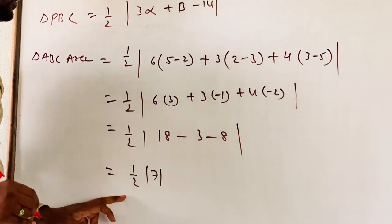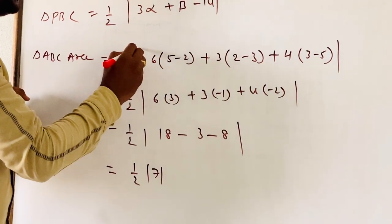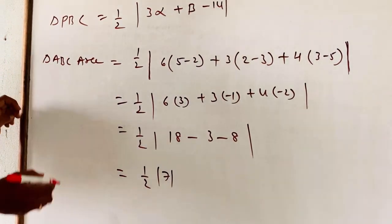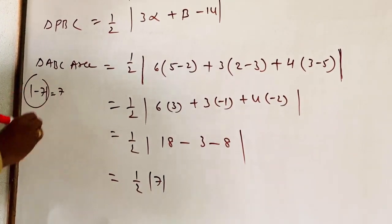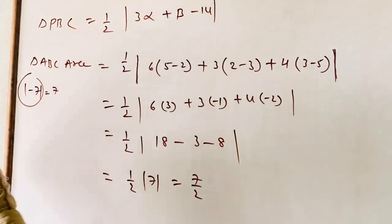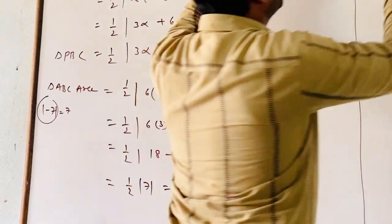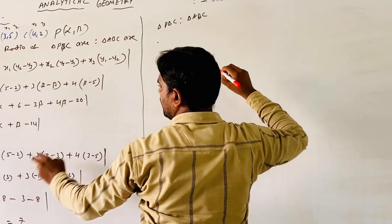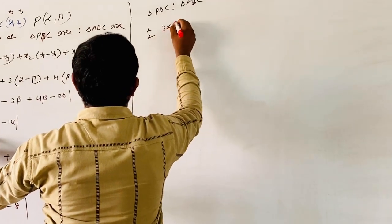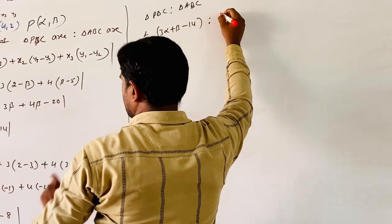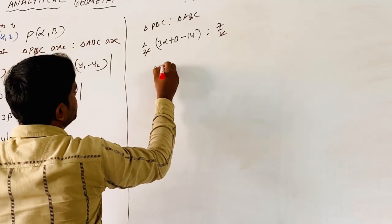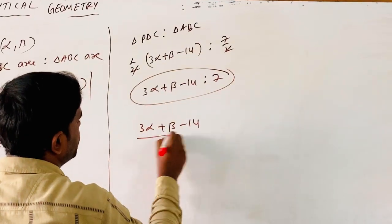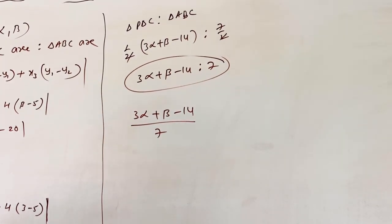The value of the area of a triangle can never be negative because we assign a modulus value. Modulus means absolute value of the result — we always take positive. Even if we get minus 7, modulus gives us plus 7. So the area of triangle ABC is 7/2. Comparing PBC to ABC: the ratio is (3α + β − 14) to 7, or written as (3α + β − 14)/7.